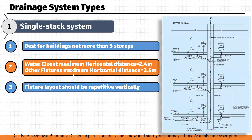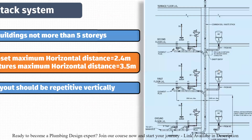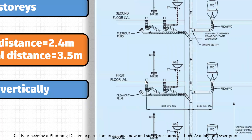The third point is the maximum horizontal distance for other fixtures. For fixtures other than the WC — such as floor traps, showers, and wash basins — the limit is 3.5 meters, or 3,500 mm.